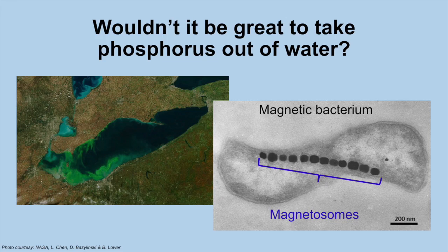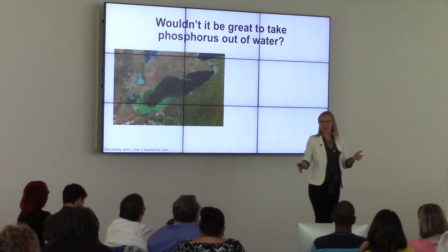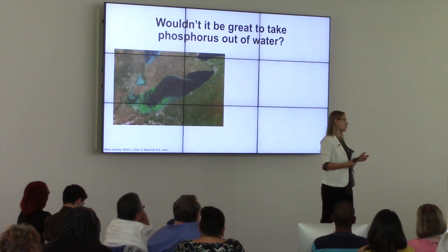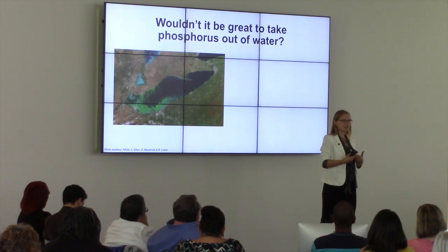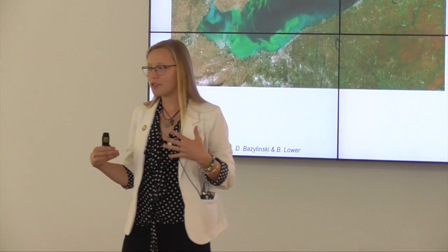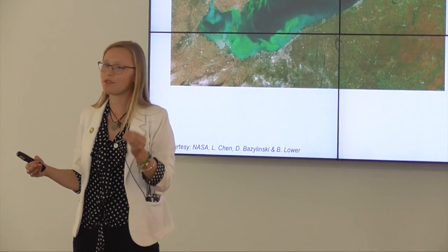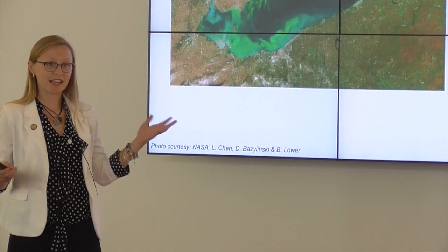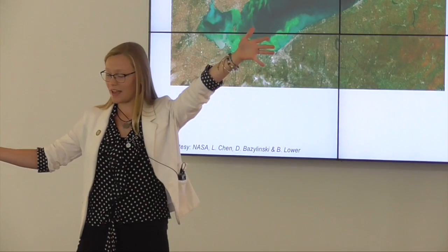Wouldn't it be great if we could just simply take all the phosphorus out of our water? The obvious solution is to limit our phosphorus, but it's not always that simple. We use it in agriculture and lots of different products. To limit it, we might cause a problem — we have policies in place already, our farmers need it. So it's not always easy to just remove the phosphorus. From 2014, the Toledo Water Emergency is a giant satellite image that demonstrates how big this issue is.